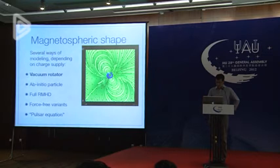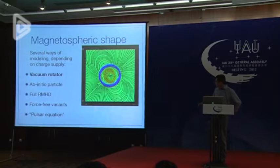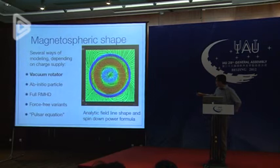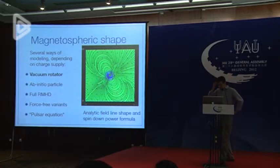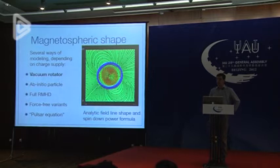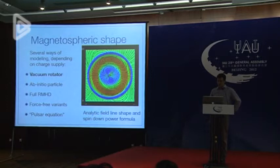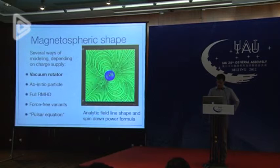The vacuum rotator uses the Deutsch analytic formula, giving a rotating vacuum electromagnetic field. This is not much of a model of a magnetosphere — the field lines are completely analytically known — so you try to put more physics on top of this background electromagnetic field, but you realize it's not self-consistent because any kind of plasma will try to perturb this electromagnetic field.